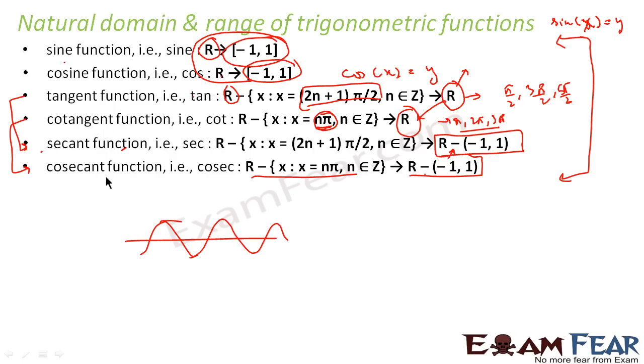Cot and cosec, since it has sin in the denominator, can't take n pi in the domain.